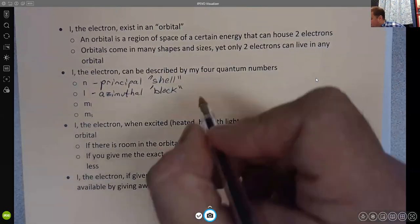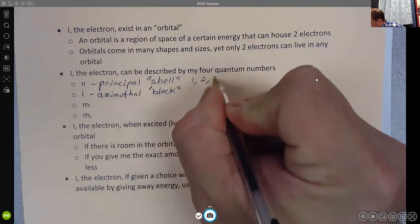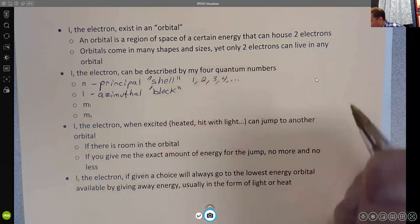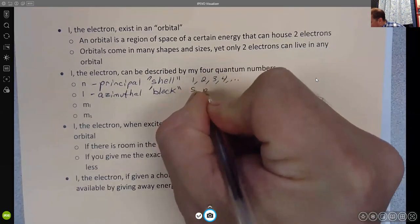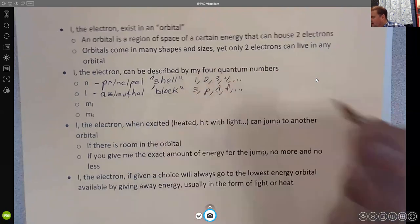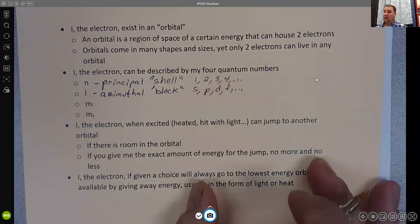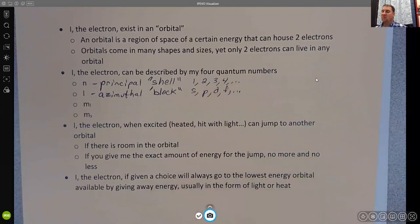So one, two, three, four, etc. for the shell. S, P, D, F, etc. for the l or the azimuthal quantum number or the block.